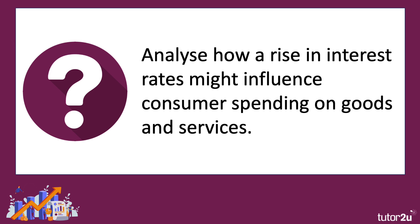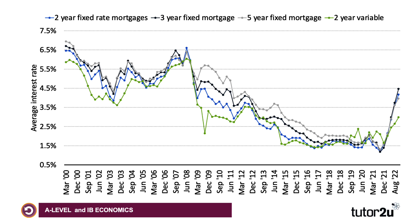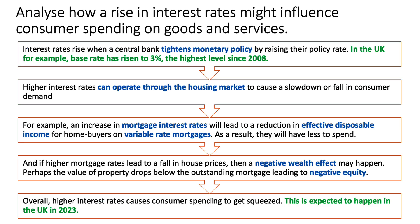Analyze how a rise in interest rates might influence consumer spending on goods and services. This chart shows mortgage interest rates — the cost of servicing home loans in the UK. For many years after the financial crisis, they were falling, on a downward trajectory. But since the turn of 2022, mortgage rates have been rising sharply. This chart takes us up to September 2022, and I'm going to focus on how interest rates can affect consumer spending through the housing market.